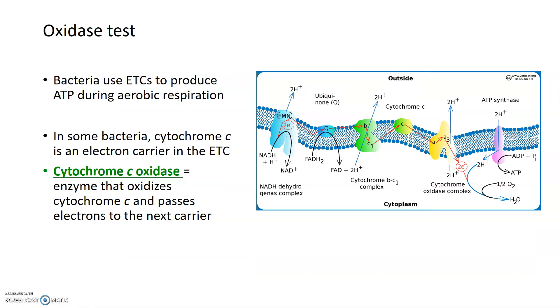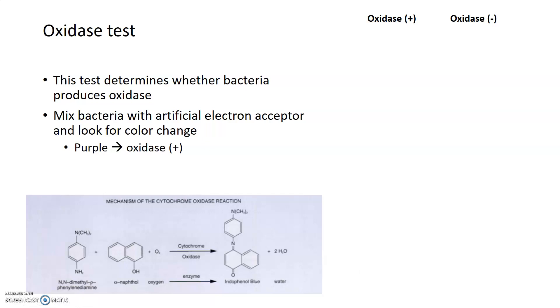This next test, the oxidase test, is used to determine the presence of an enzyme called oxidase in different types of enterobacteria. We have talked about in lecture that bacteria use electron transport chains, like this one on the right, to produce ATP during aerobic respiration, or respiration that requires oxygen. In some bacteria, there's an electron carrier you can see in the center here, known as cytochrome C. Then there's an additional enzyme called cytochrome C oxidase, which oxidizes the cytochrome C and basically takes its electrons from it and then passes it down the line to the next member of the electron transport chain. What an oxidase test does is determine whether a bacteria has that oxidase enzyme or not.